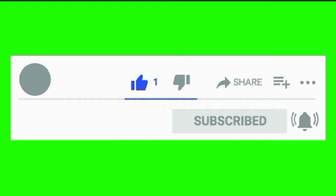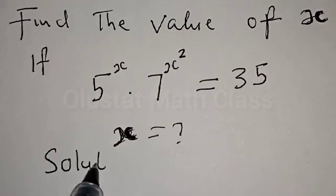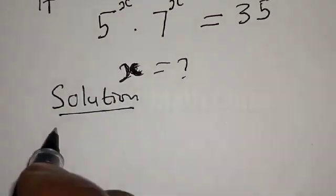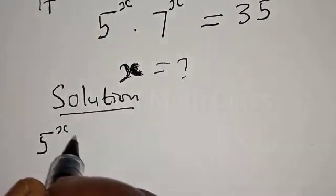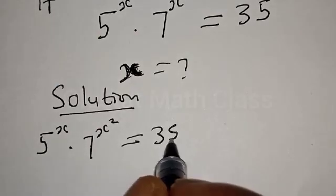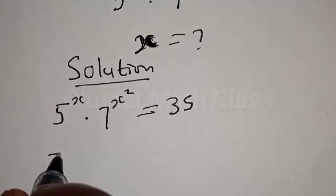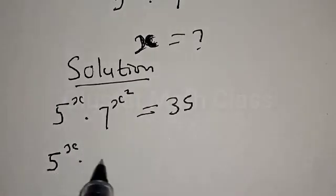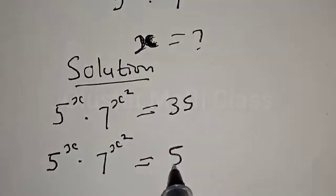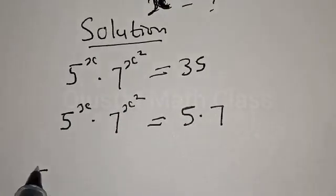Solution: We have 5 raised to power x multiplied by 7 raised to power x squared is equal to 35. This can be rewritten as 5 raised to power x multiplied by 7 raised to power x squared is equal to 35, which is 5 multiplied by 7.